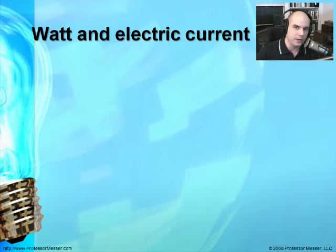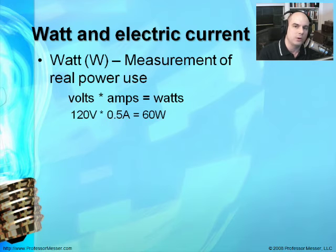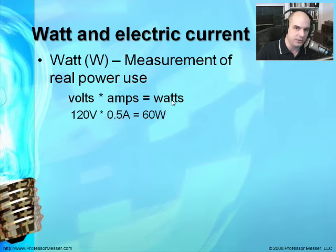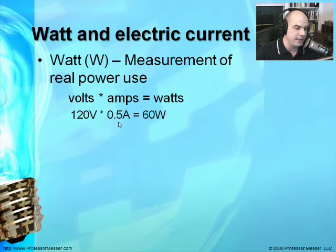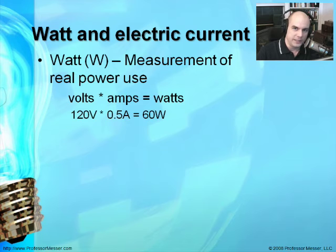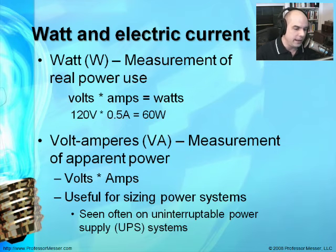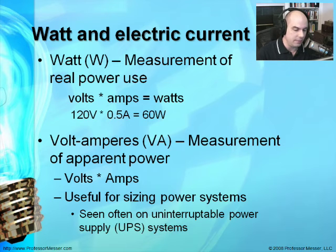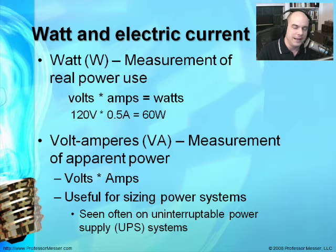There are also a couple of terms you're going to hear about. One is the watt. When we talk about wattage, we're talking about how much power we're actually using. It's really multiplying voltage and the number of amps in use to get the total wattage. For example, on a 120-volt system in the United States, using 0.5 amps gives you 60 watts — like a 60-watt light bulb. You'll also see volt-amperes, or VA, which refers to apparent power, used when sizing up UPS systems to figure out how much battery is stored.